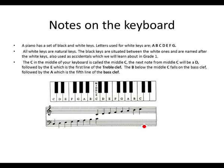Let's take a look at Notes on the Keyboard. We all know that a piano has a set of black and white keys. Letters used for keys are the same letters or alphabets that we use in music, from A counting to G: A, B, C, D, E, F, G. These are the letters we use in music and for our white keys.